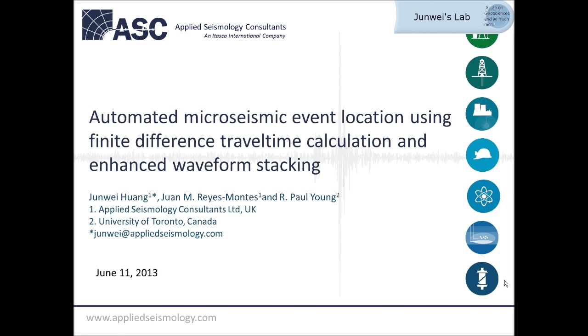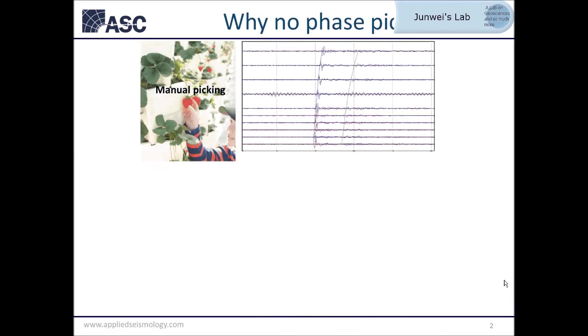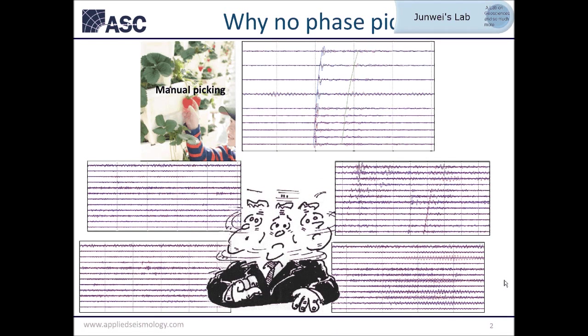By saying automated, we mean there's no phase-picking either by a person or by a computer. This work is motivated by a common observation that manual picking can only be fun and accurate when the data quality is good and data amount is manageable. However, in the field, a huge amount of data can be dumped into your hard drive in seconds with mixed signal-to-noise ratio, and in that case phase-picking is time-consuming and error-prone.